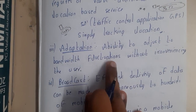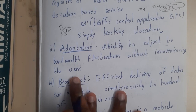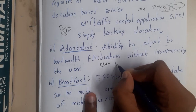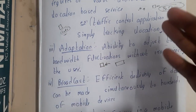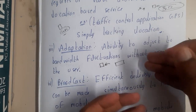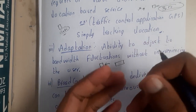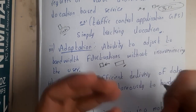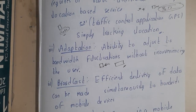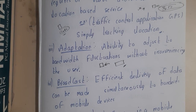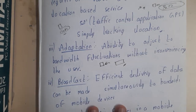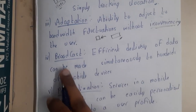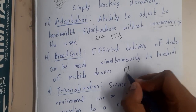Another characteristic is adoption — the ability to adjust to bandwidth fluctuations without inconvenience to the user. As mentioned, wireless devices can have high bandwidth variation, but you rarely notice it while watching YouTube videos. There is a good adoption algorithm behind this concept, so the device adapts and overcomes the variation without creating inconvenience to the user.